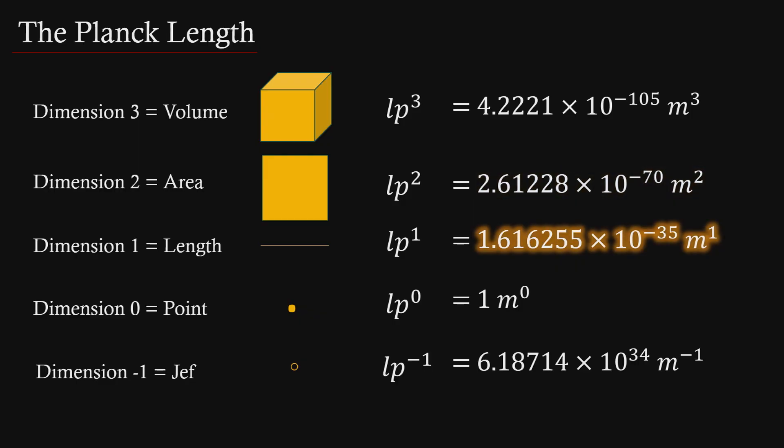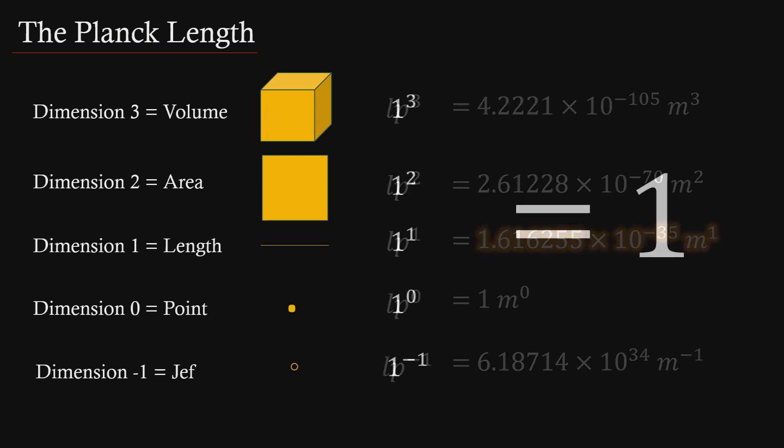Length is what ties dimensionology directly to physics. The Planck length in meters, representing the minimum distance for our classical physics, should also be subject to the rules of dimensionology in exactly the same way as any other length. There is nothing special about the Planck length other than it is the smallest measurement in dimension one that we can confidently use.